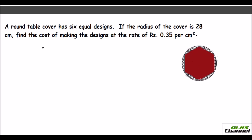Second problem: a round table cover has six equal designs. The radius of the cover is 28 centimetres. Joining opposite vertices reveals a hexagon, and a hexagon is made up of six equilateral triangles, so each central angle is 60°. Let us find the area of the designs alone by taking one design, naming its vertices O, A, and B.